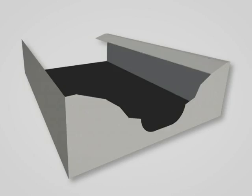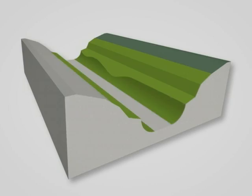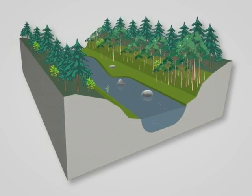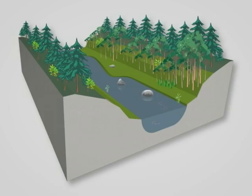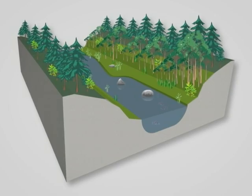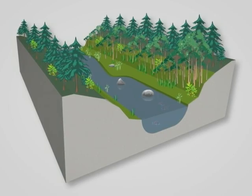A watershed system consists of several parts that are interconnected and contribute to the function of streams and rivers.